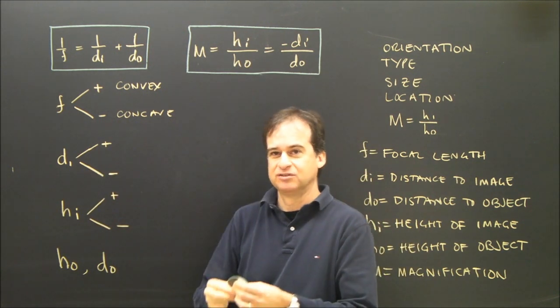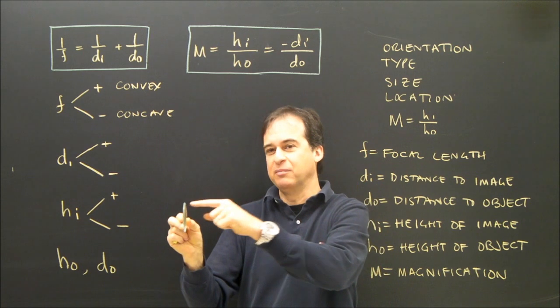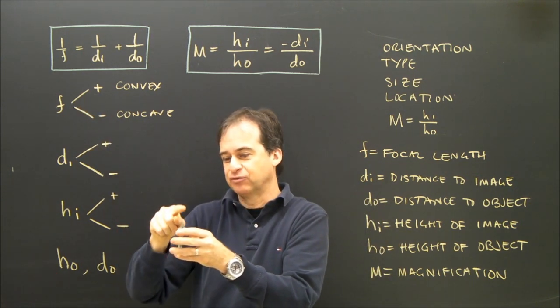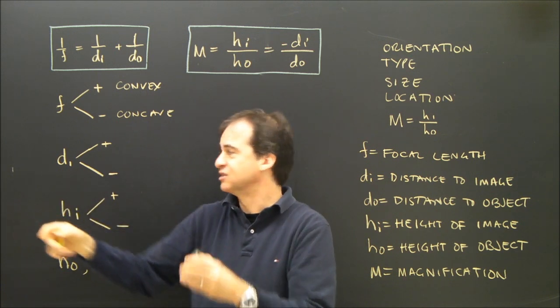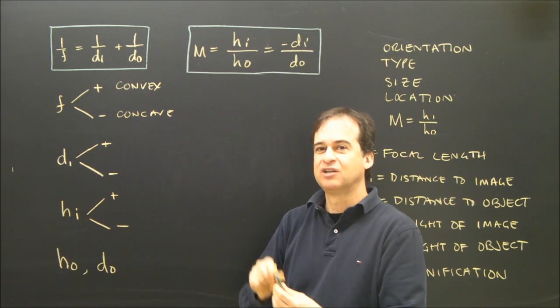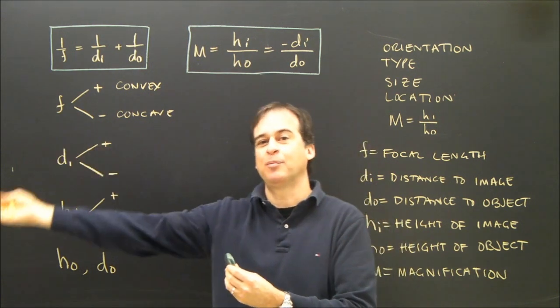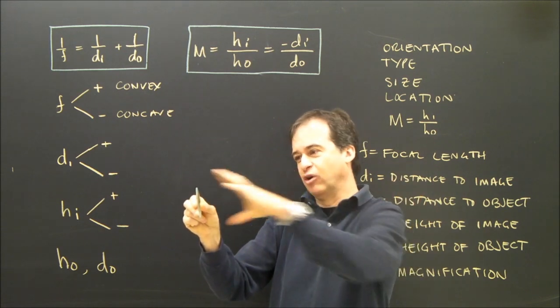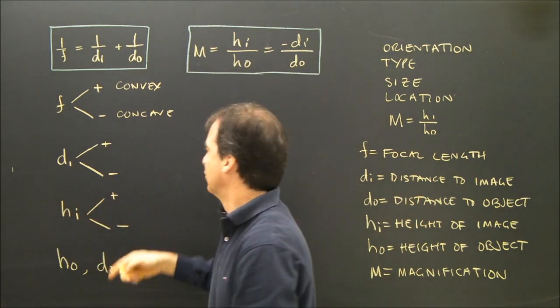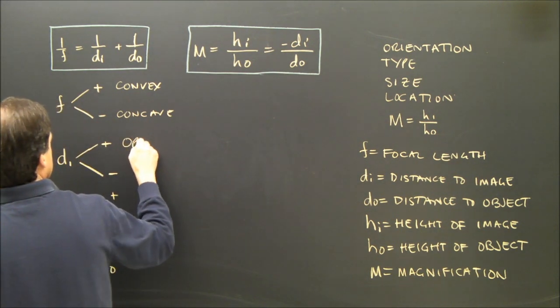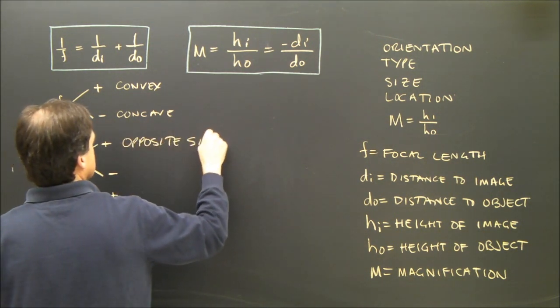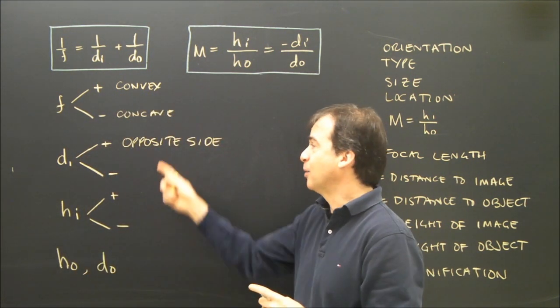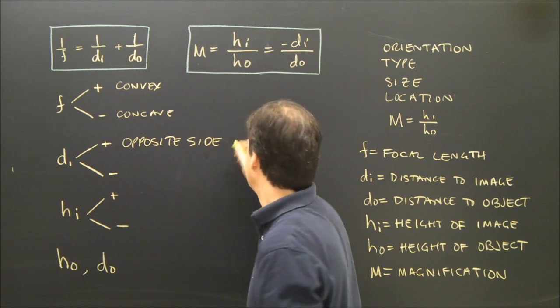The distance to the image. Here's our lens, here's our object. I can measure the distance to the object, and somewhere there's the image. If it's projected on a screen, I'd measure from the lens to where the image is, that's the distance to the image. Positive means the image is on the opposite side of the lens, which is the way we picture most ray diagrams. You've got an object here, you've got a lens, you draw three rays, you get an image over here. So this would mean the opposite side of the lens.